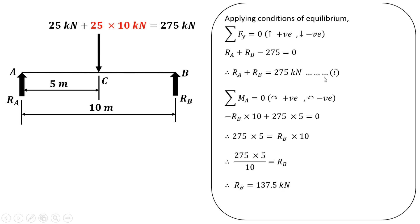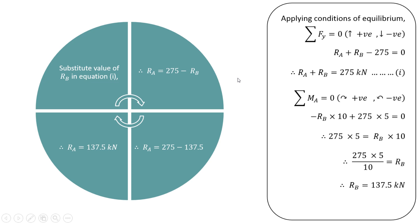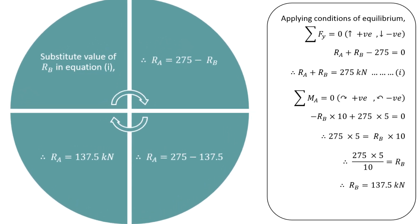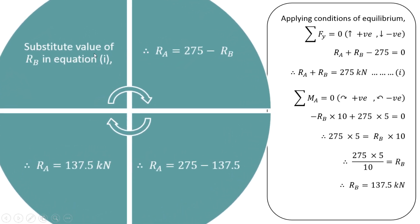Substituting the value of Rb into Equation 1, Ra = 275 minus Rb = 275 minus 137.5. Therefore Ra is also equal to 137.5 kilonewton.